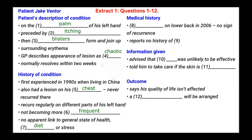Question number eight is: blank on lower back in 2006, no sign of recurrence. The patient says that the doctor wanted to have a look also because he had a malignant melanoma on his back that was removed in 2006. It was at quite an early stage and hadn't got too deep. So the answer to number eight is: malignant melanoma.